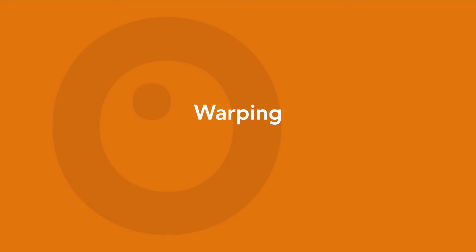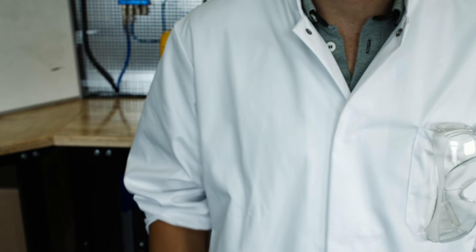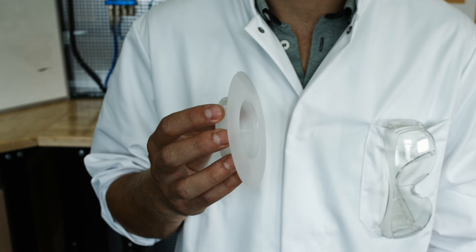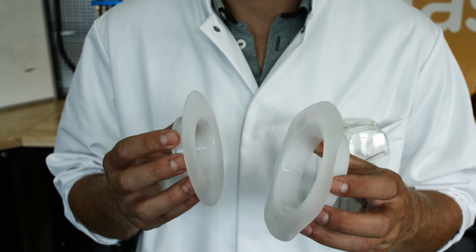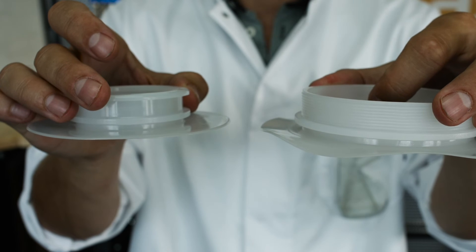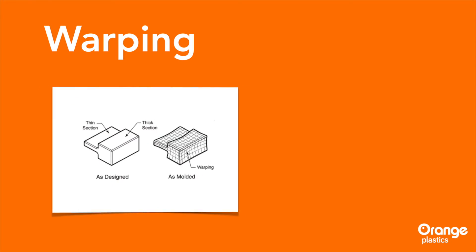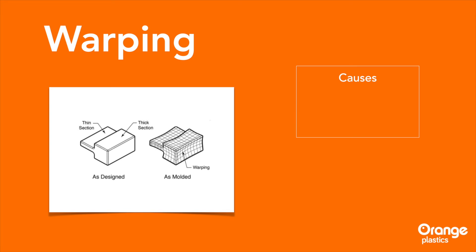Warping. Warping is a deformation that occurs when different parts of a plastic product shrink unevenly, similar to how wood can warp unevenly after drying. In most cases, warping occurs when cooling happens too quickly.